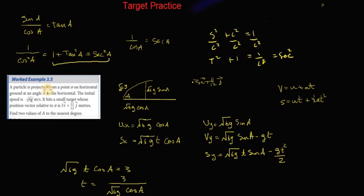First example, 3.5. A particle is projected from a point O on the horizontal ground at an angle A to the horizontal. The initial speed is root 6g metres per second. It hits a small target whose position vector relative to O is 3i plus 11 over 12j metres. Find two values for A to the nearest degree. So a target practice, it is like a target practice. It's like you're hitting something.